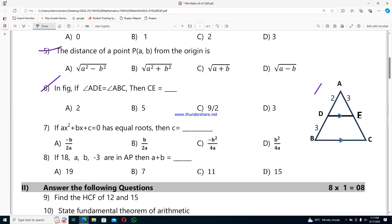Seventh question: if ax²+bx+c=0 has equal roots, then c equals option A -b/2a, option B +b/2a, option C -b²/4a, option D +b²/4a.